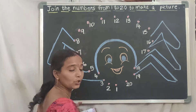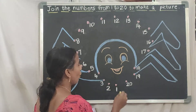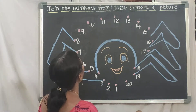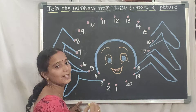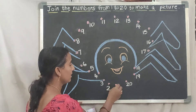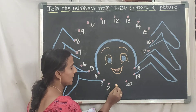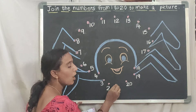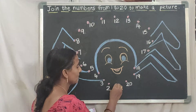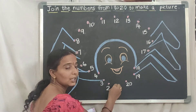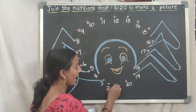You should join all the dots in sequence order. Put your pencil on dot 1, then start joining the dots. Don't remove your hand, children.